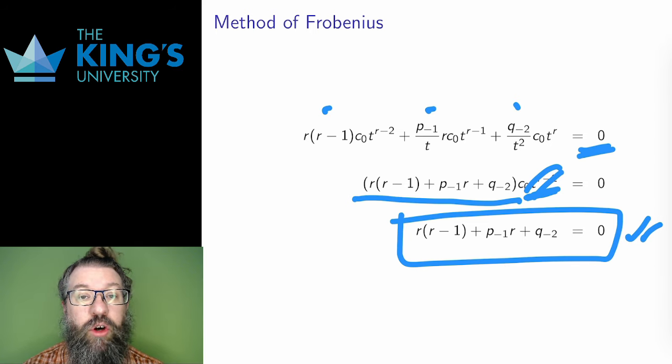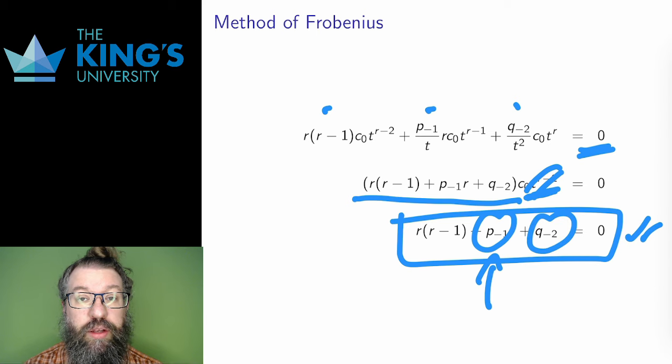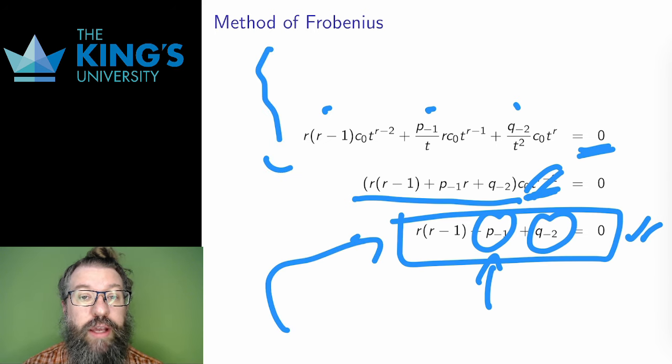This quadratic is called the indicial equation. All I need to know to set it up are the two coefficients, P minus 1 and Q minus 2, and these can be calculated by the limits that I wrote down earlier. And as with all of these techniques, the general derivation I've done in this video doesn't need to be repeated. You could just calculate P minus 1 and Q minus 2, write down this quadratic, calculate r, and then move on to solve the series for each root r.